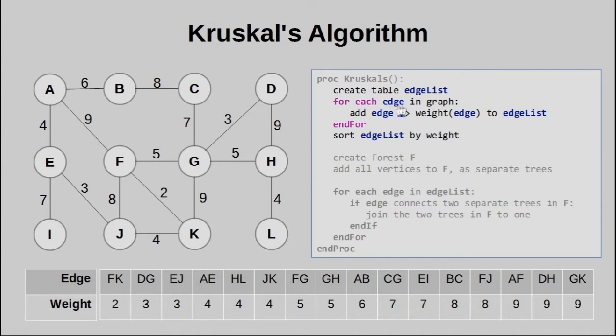Basically, for every edge in the graph, that is, every one of these connections, we add both things into the edge list. That is, the name of the edge itself,